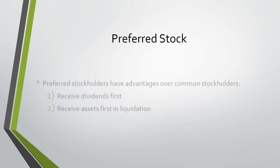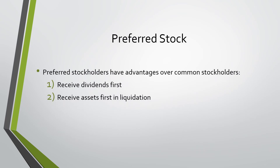Preferred stock. Preferred stockholders have advantages over common stockholders. The first one being they receive dividends first, and the second one being they receive assets first in liquidation if the company does shut down. These are however rare in practice.